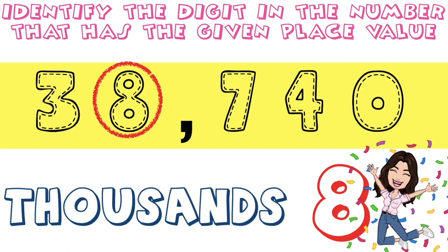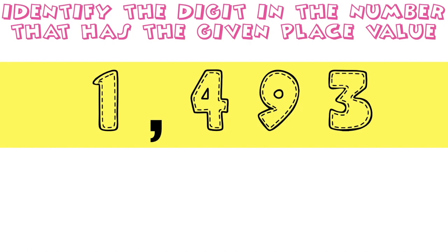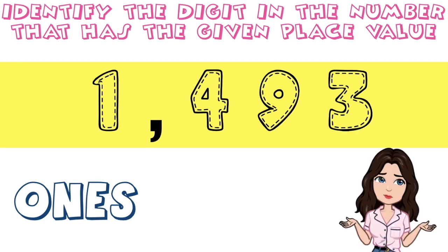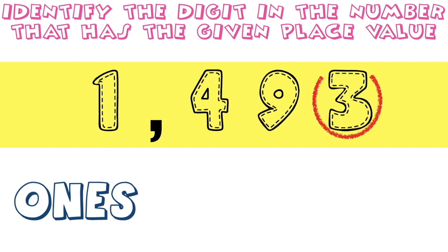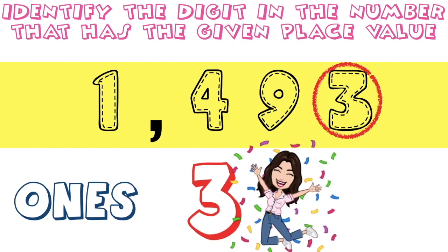Let's have our last example: 1,493. What is the digit in the ones place? That's so easy! Ones! So digit 3 is in the ones place!